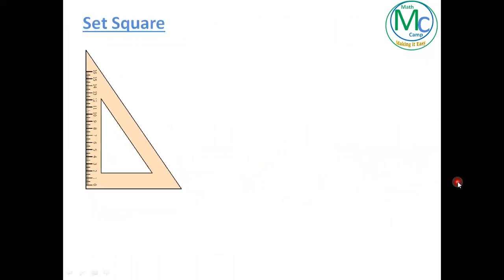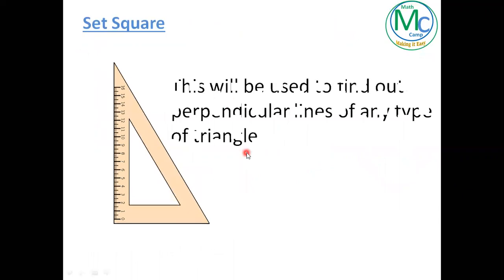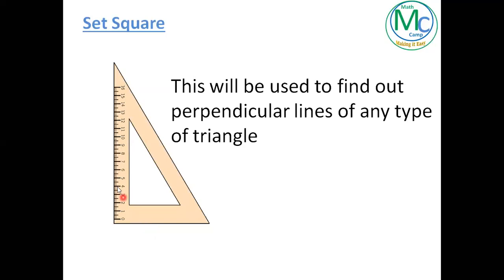So to find out perpendicular lines, I'm going to use the set square. These two lines of the set square are meeting each other at a 90 degree angle, so one line will work as base and the other line will work as height. I'm going to take this side of the set square as base and this side of the set square as height.